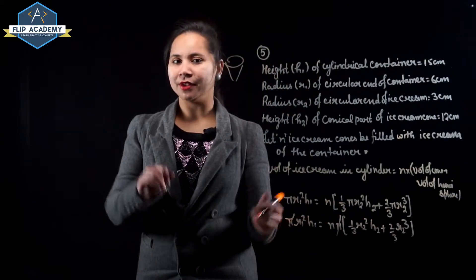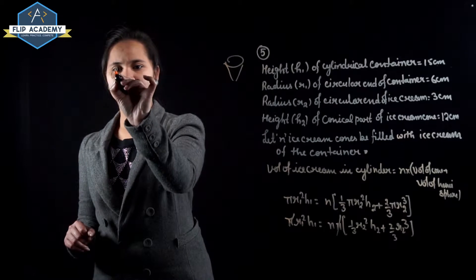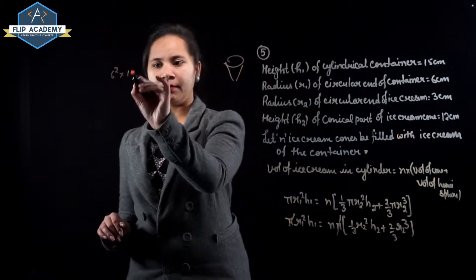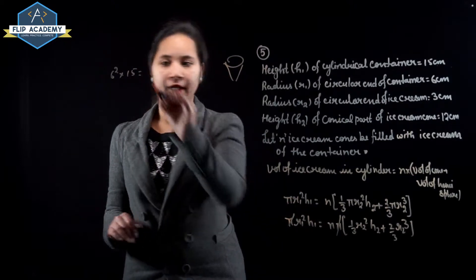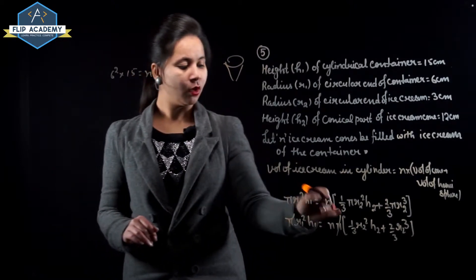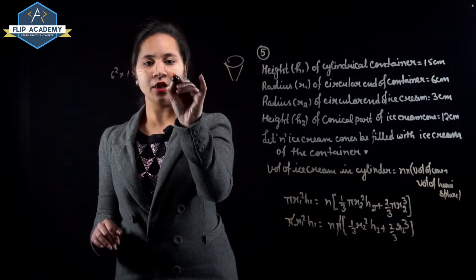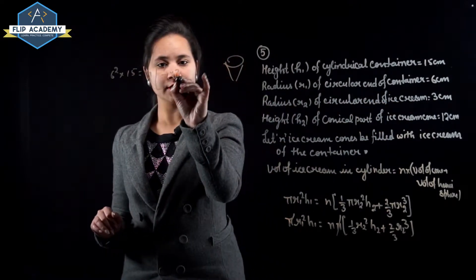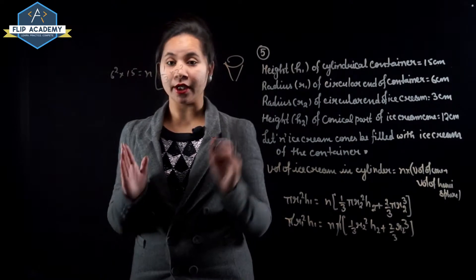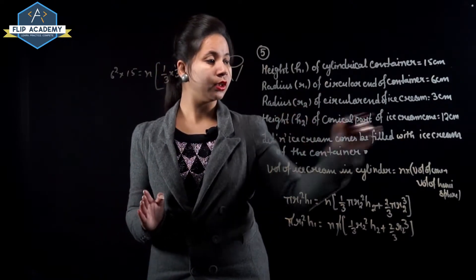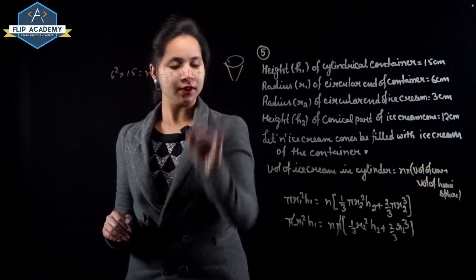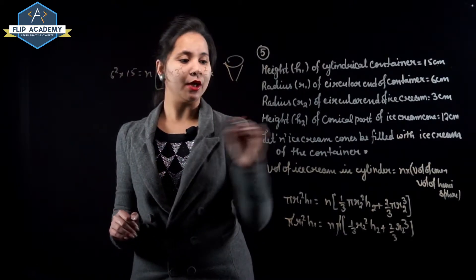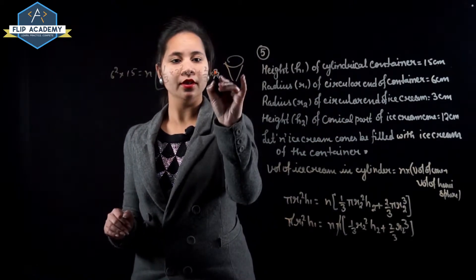Substituting values — r1 = 6, h1 = 15, r2 = 3, h2 = 12: 6² × 15 = n × (1/3 × 3² × 12 + 2/3 × 3³). This simplifies to 36 × 15 = n × (36 + 18).